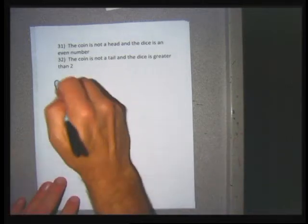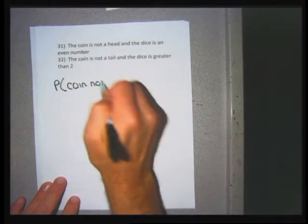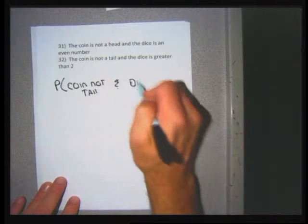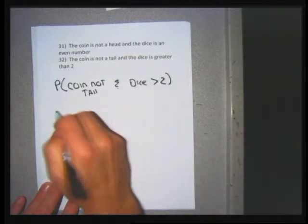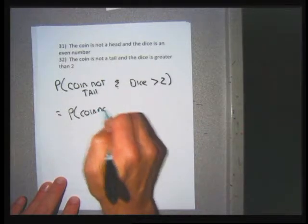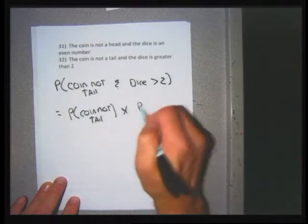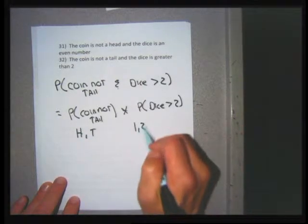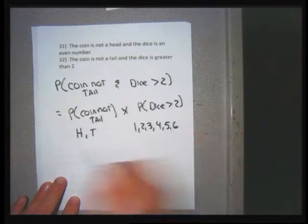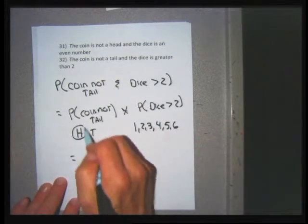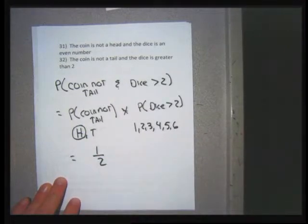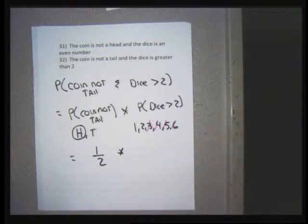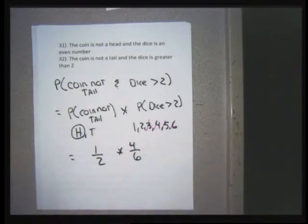For problem 32, the coin is not a tail and the dice is greater than 2. That equals the probability the coin is not a tail times the probability the dice is greater than 2. For the coin: 1 item in the sample space is not a tail out of 2, so 1 over 2. For the dice: there are 4 elements in the sample space greater than 2, so the probability is 4 over 6.